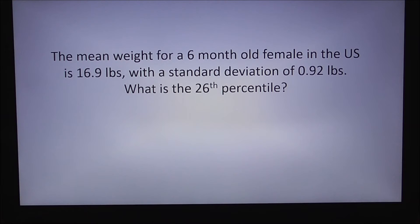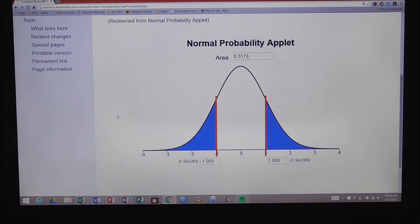Let's look at the givens here. The mean is 16.9, the standard deviation is 0.92, and the percentile I'm looking for is the 26th. I need to know how to calculate a z-score for that 26th percentile.